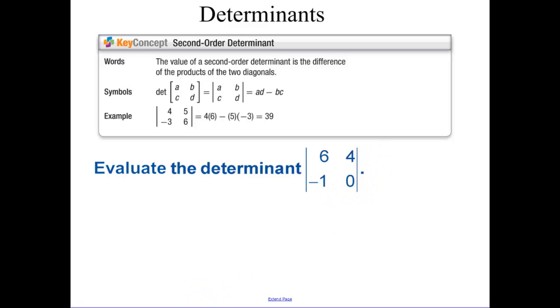When finding the determinant of a 2 by 2 matrix, you take the main diagonal, AD, multiply those two numbers together, then subtract the other diagonal, BC.